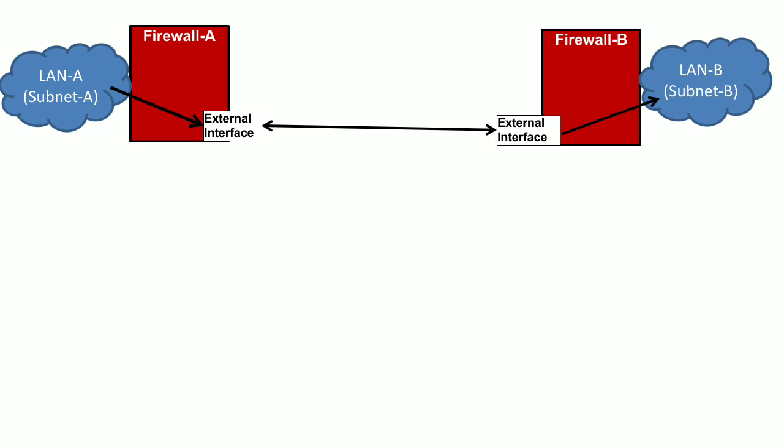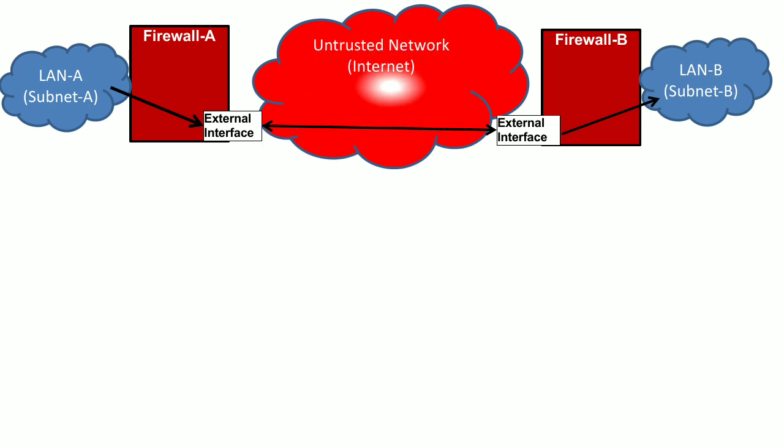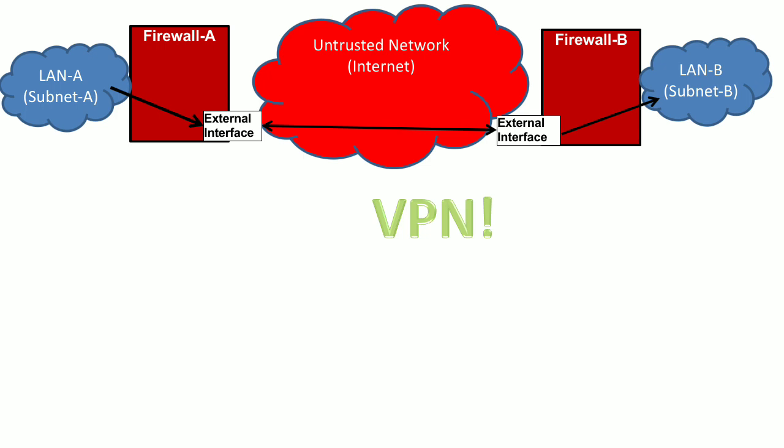The network between these two external interfaces is managed by your internet service provider and is therefore an untrusted network — for example, it can be the internet. What we can do is encrypt the traffic while it is flowing over this untrusted network. For that we use a virtual private network, or VPN. The VPN will virtually enable your network to be private on this untrusted network by encrypting your network data between the two LANs while it flows over the untrusted network.